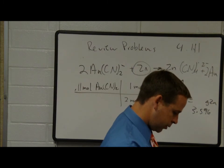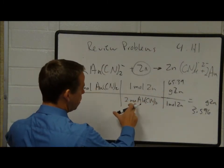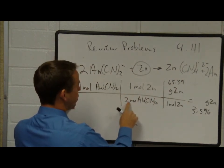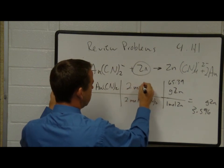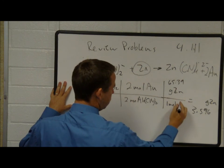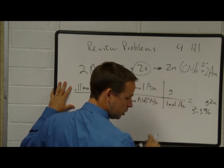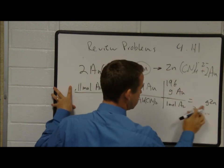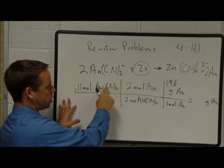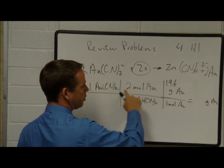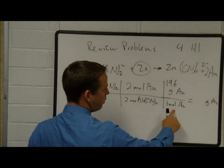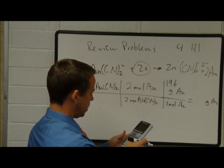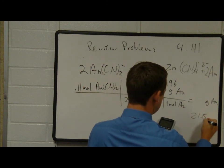How many grams of gold can form from 0.11 moles of Au(CN)2? The ratio is 2 moles Au(CN)2 to 2 moles gold — a one-to-one ratio. Gold has a molar mass of 196 g/mol. So 0.11 × 196 = 21.56 grams of gold.